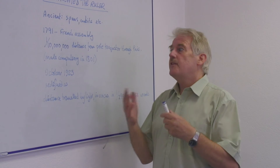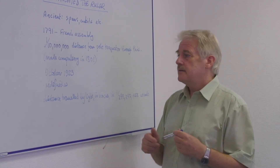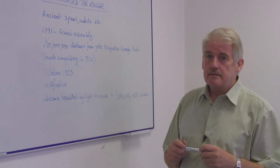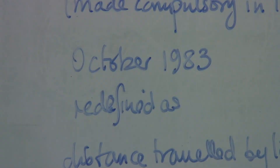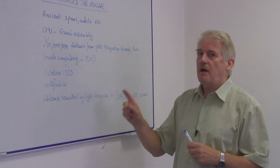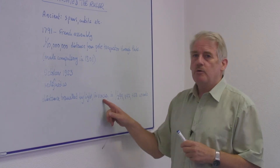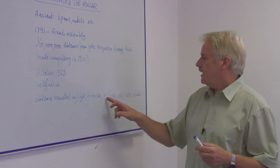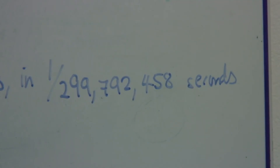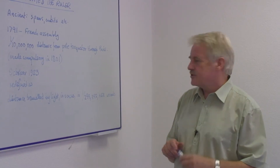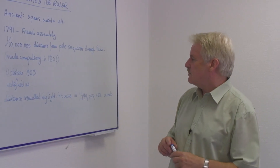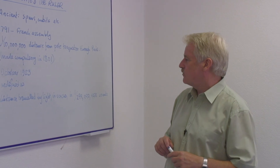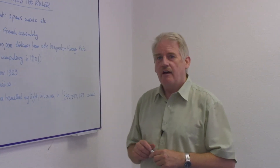But even that was then superseded by the present definition, which came in October 1983, which is the distance travelled by light in vacuo — that is when there's no air or anything else — in 1/299,792,458 of a second.